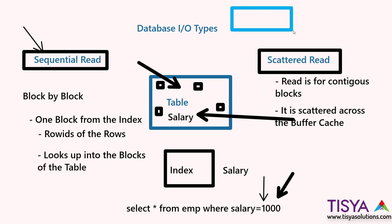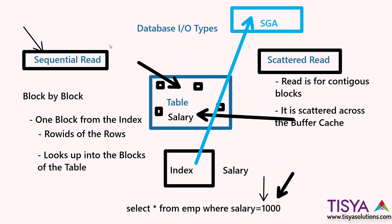Remember, the data is fetched and put into the buffer cache. If I'm doing an index-based lookup and the index blocks and table blocks are not available in the SGA, IO has to happen to fetch those blocks. This is an OS-dependent operation. If the Oracle instance is waiting for unique blocks to be read one after another, it results in a wait called sequential IO wait. For a full table scan, it results in a scattered read wait.